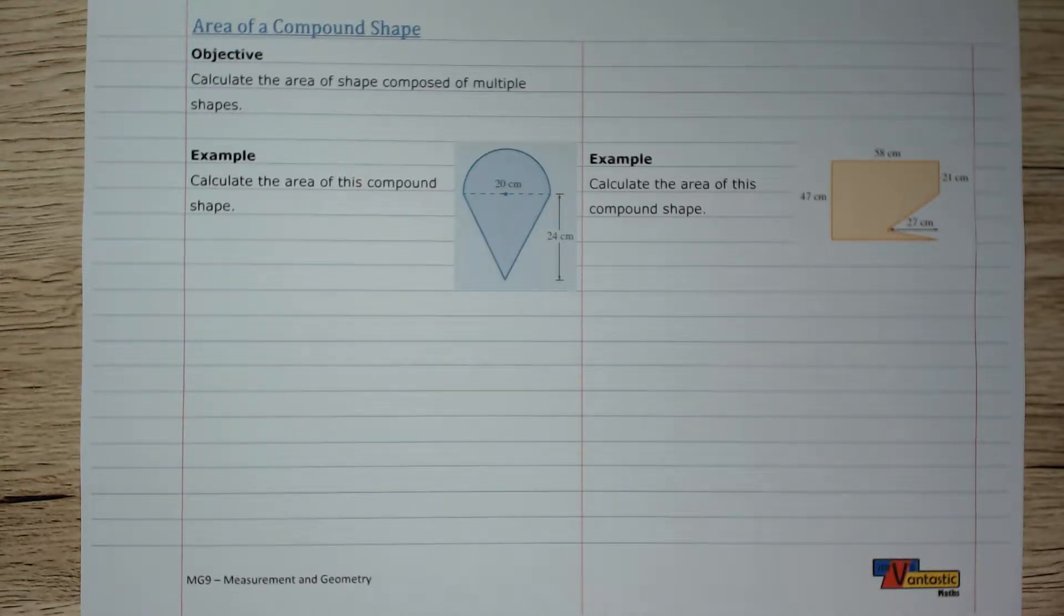Hi, this is Mr V, and in this video we're going to learn how to calculate the area of a compound shape. A compound shape is a shape that is made of a couple of basic shapes stuck together.